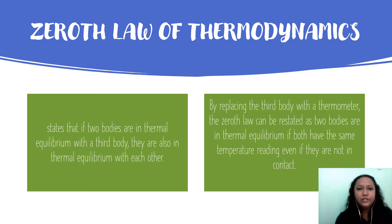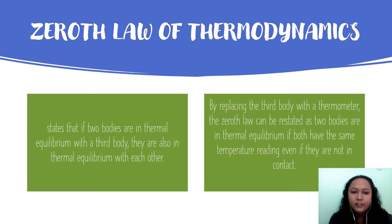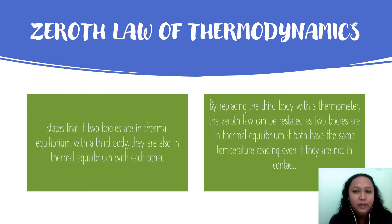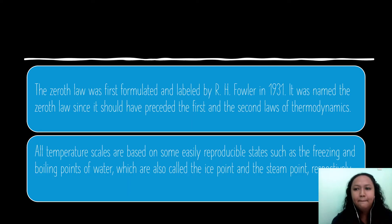The Zeroth Law of Thermodynamics states: if two bodies are each in thermal equilibrium with a third body, then they are also in thermal equilibrium with each other. By replacing the third body with a thermometer, the Zeroth Law can be restated as: two bodies are in thermal equilibrium if both have the same temperature reading, even if they are not in contact.